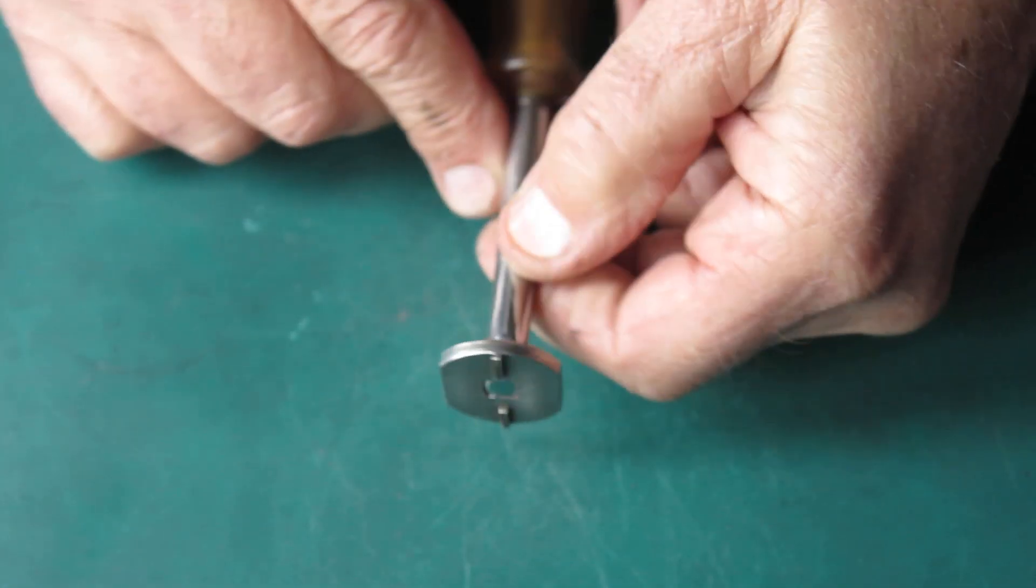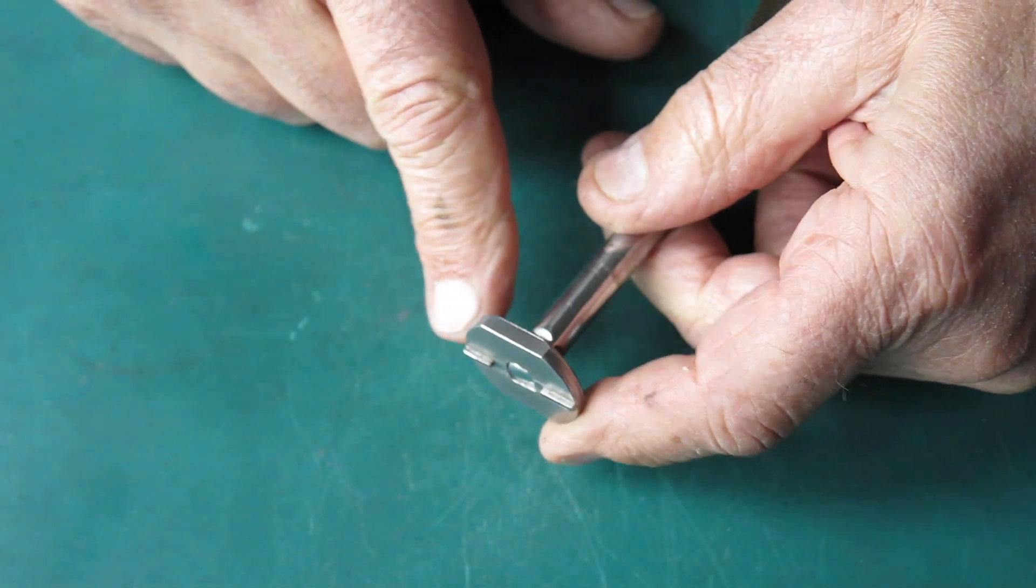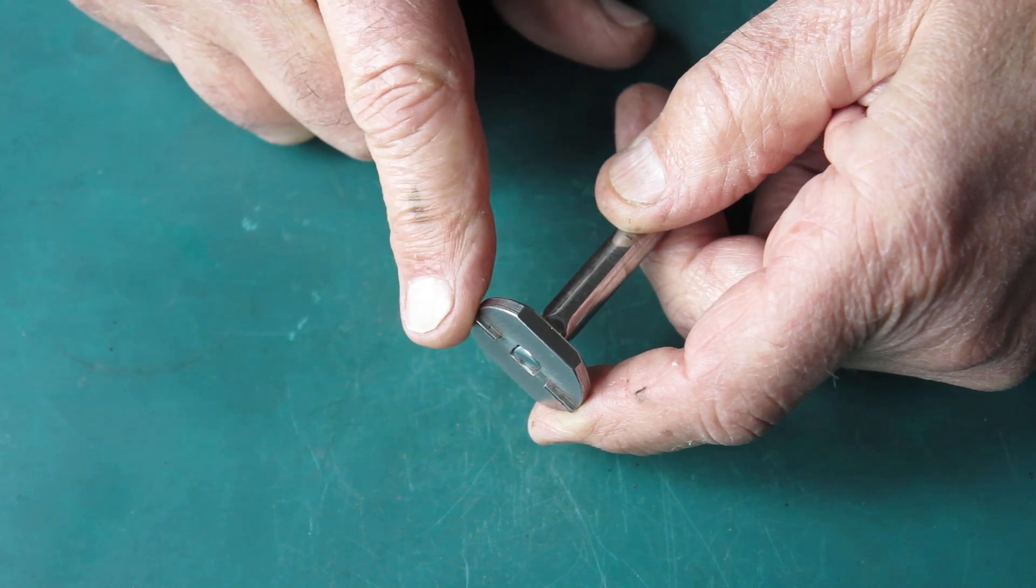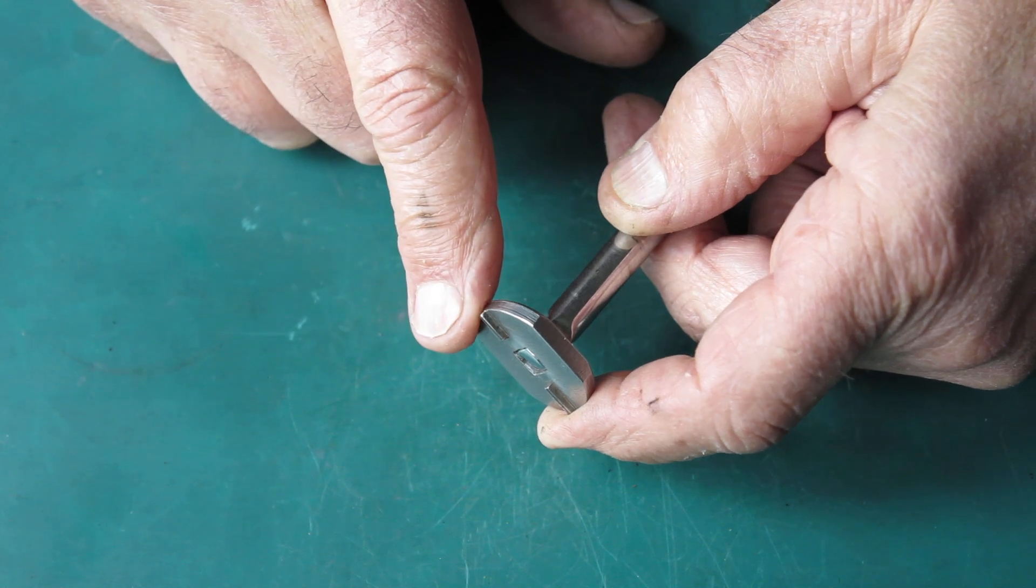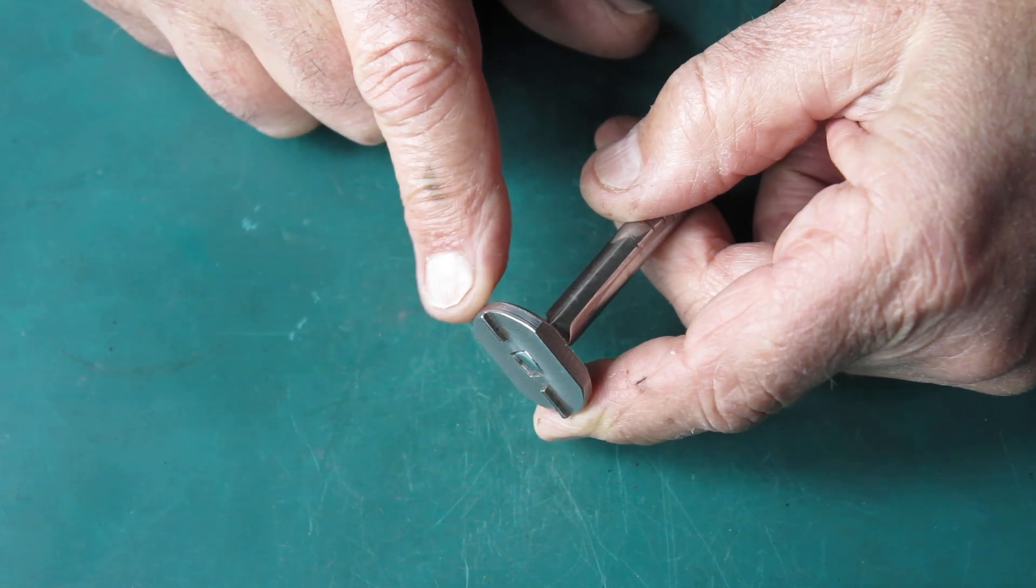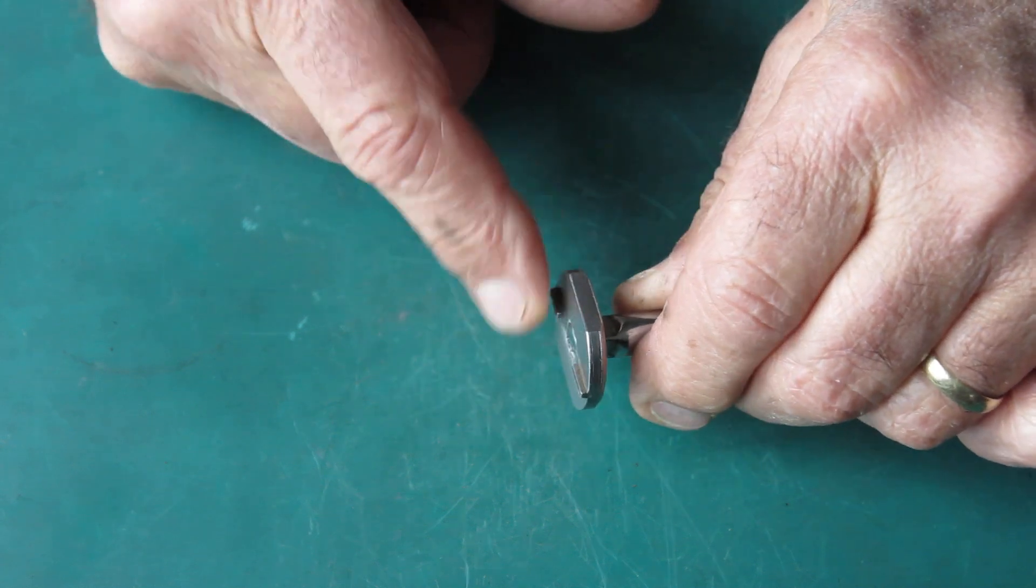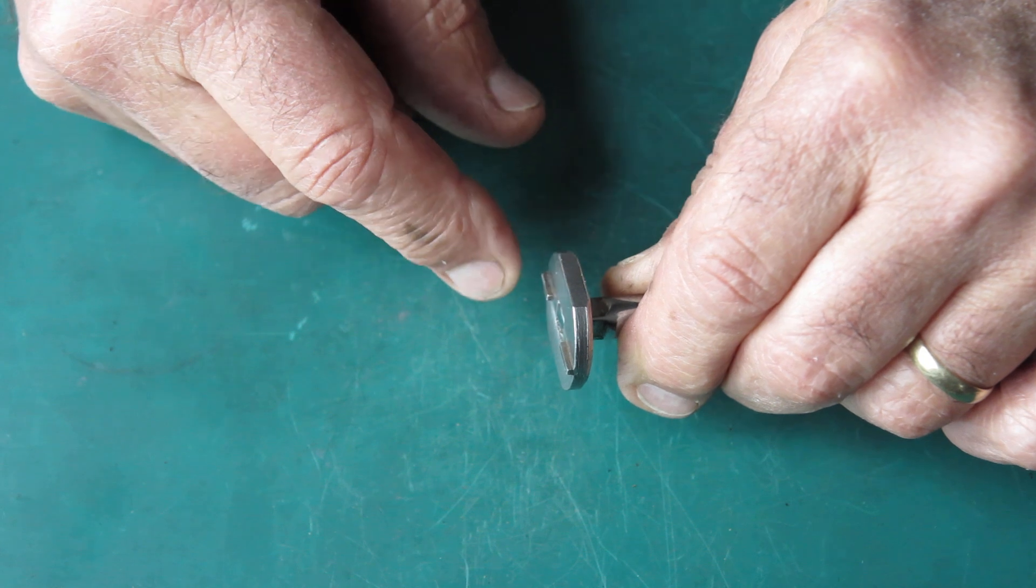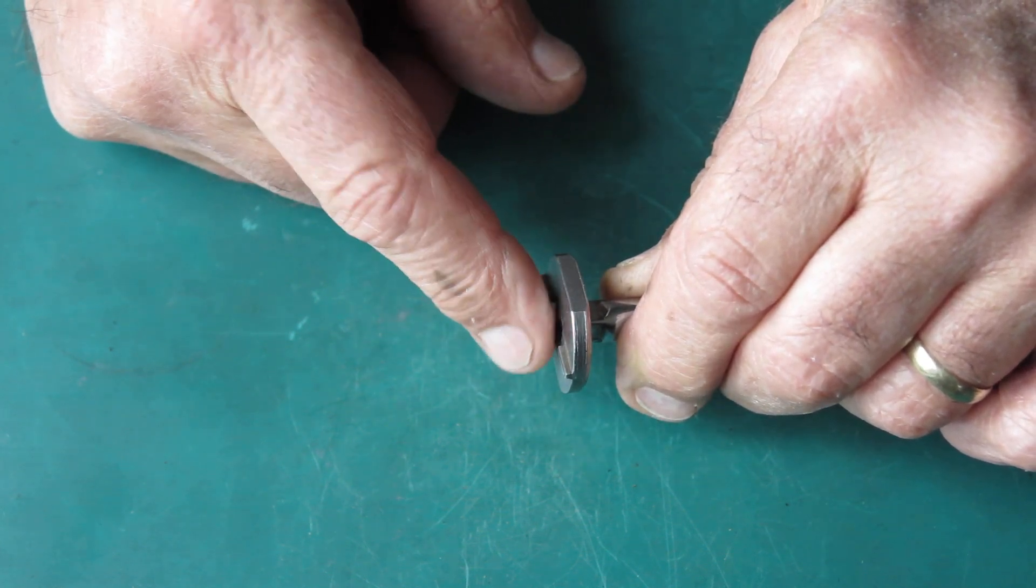So this is the tool that I've made recently. I've made this to do solely the Retinettes, but it will also do other models of camera. Now the ones that I've got in mind are the Retina 1B cameras, anywhere where the retaining ring sits up proud of the rear lens surface.